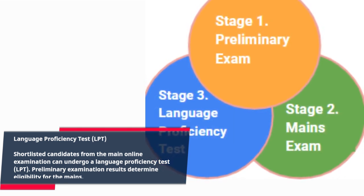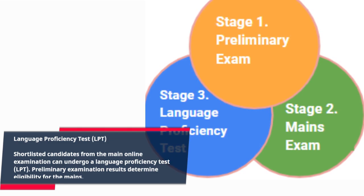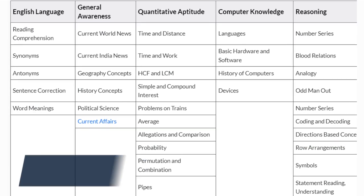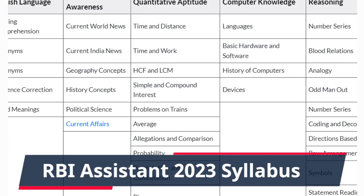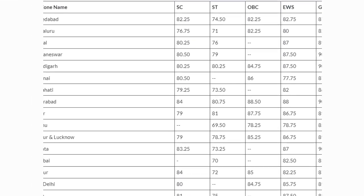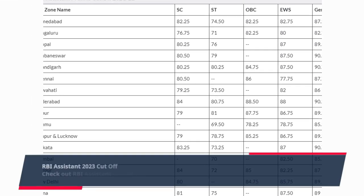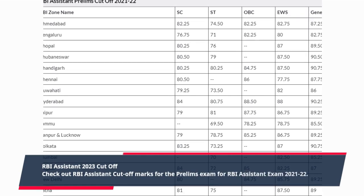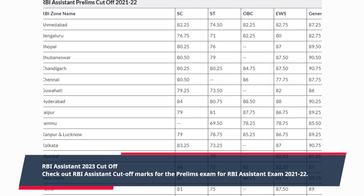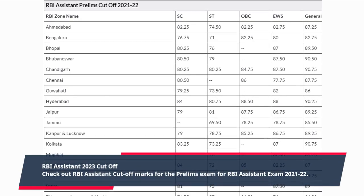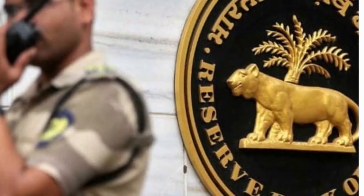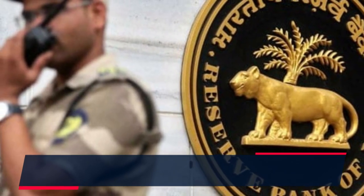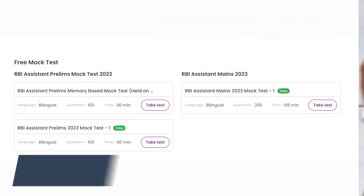Preliminary examination results determine eligibility for the mains. Additional topics covered include RBI Assistant 2023 Syllabus, Cut-Off marks for the Prelims exam from 2021-22, and Mock Tests.